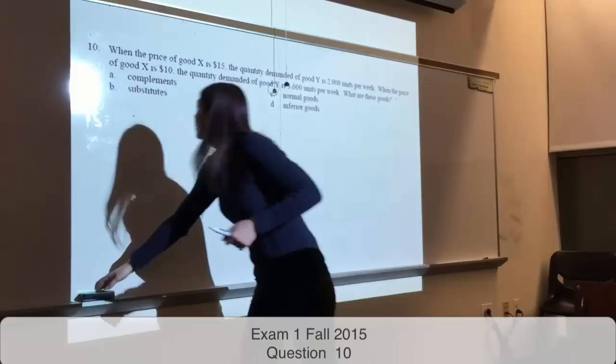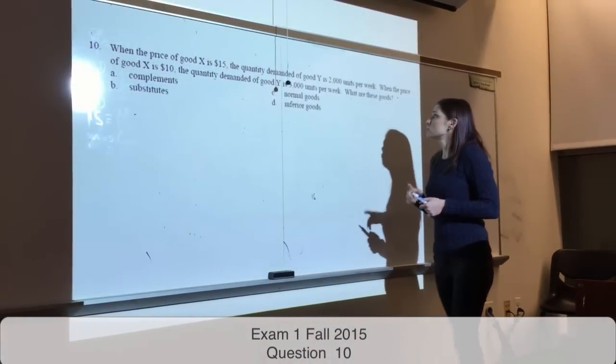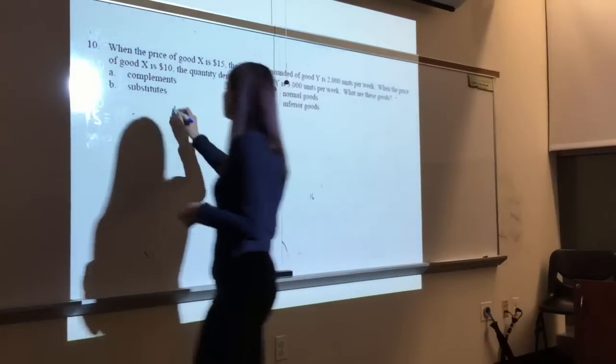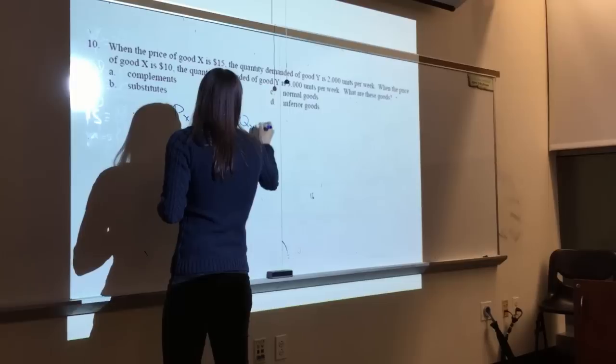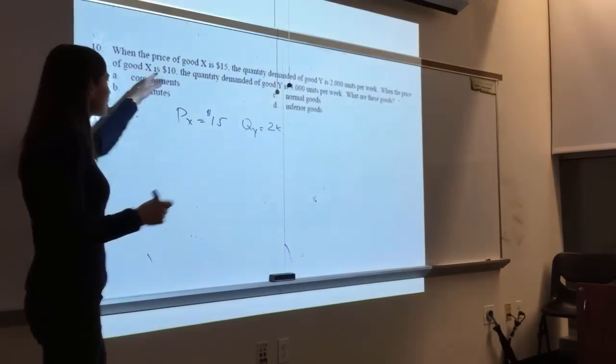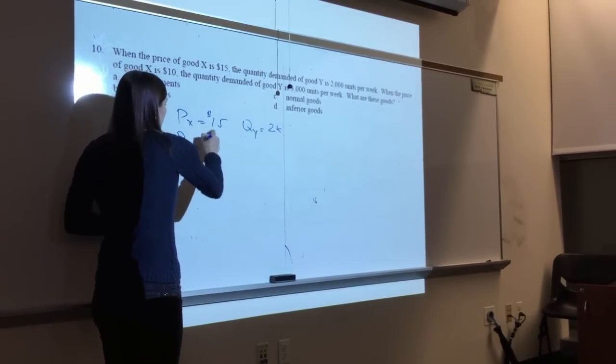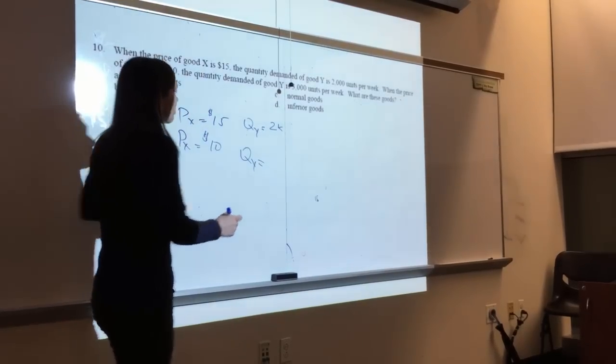When the price of good X is $15, the quantity demanded of good Y is 2,000. So price of X is 15, quantity Y is 2,000. And when the price of good X is $10, the quantity of Y is 3,000.